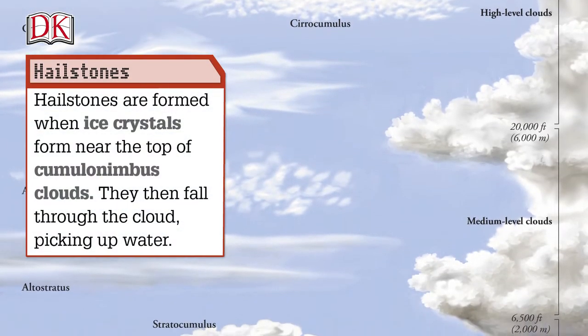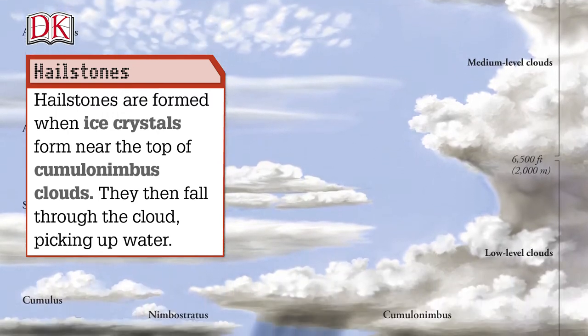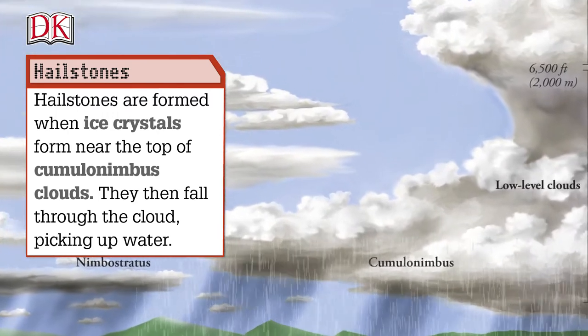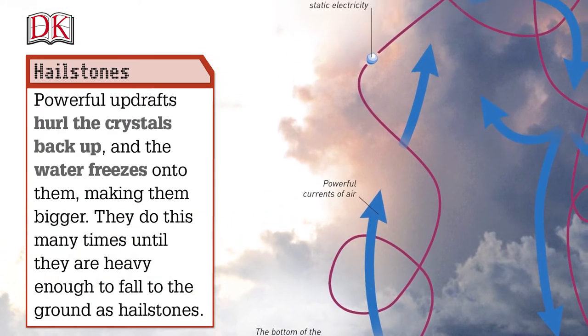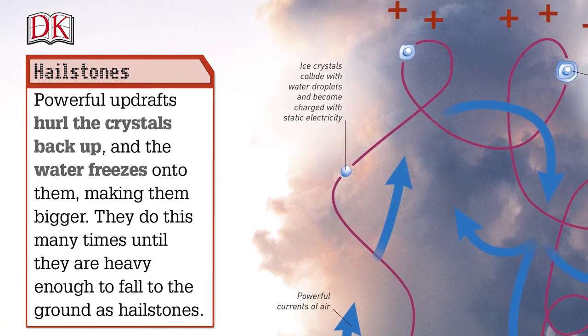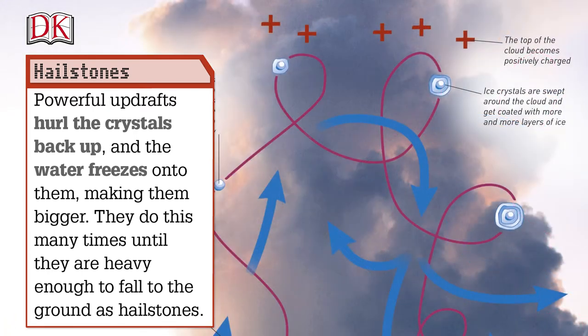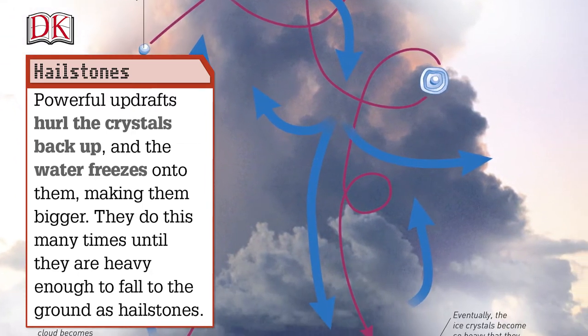Hailstones are formed when ice crystals form near the top of cumulonimbus clouds. They then fall through the cloud, picking up water. Powerful updrafts hurl the crystals back up, and the water freezes onto them, making them bigger. They do this many times until they are heavy enough to fall to the ground as hailstones.